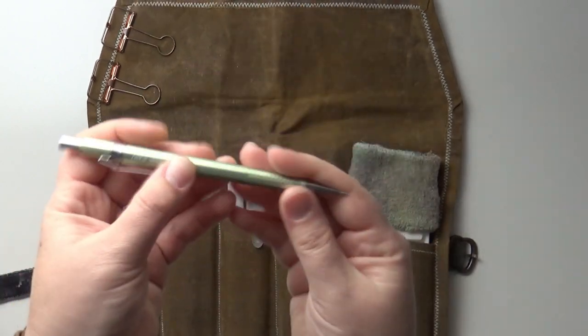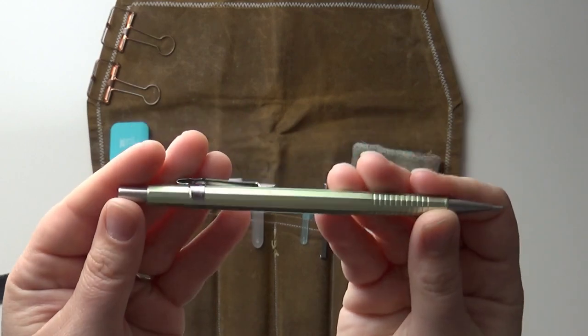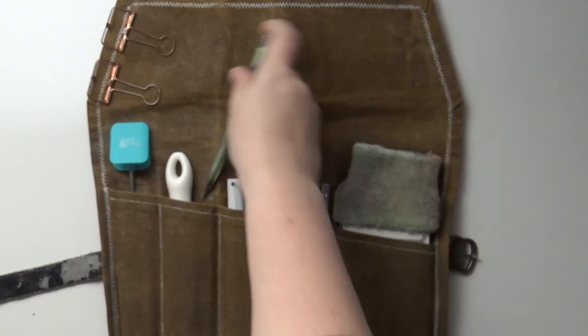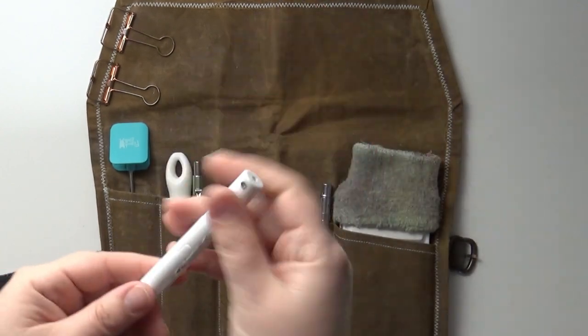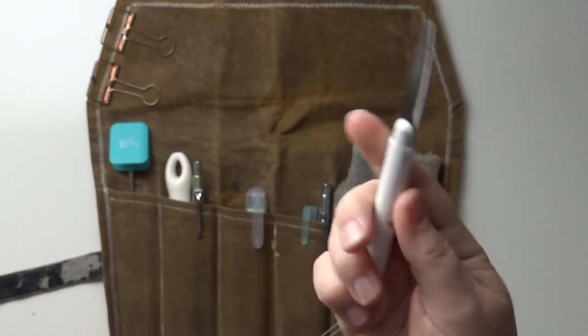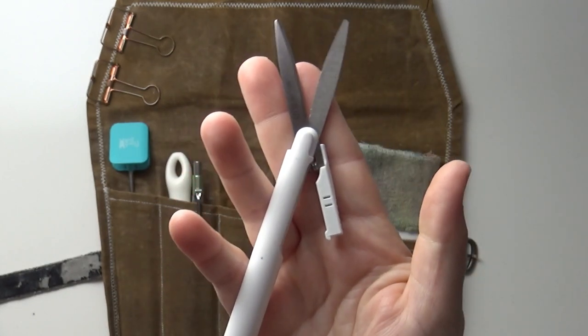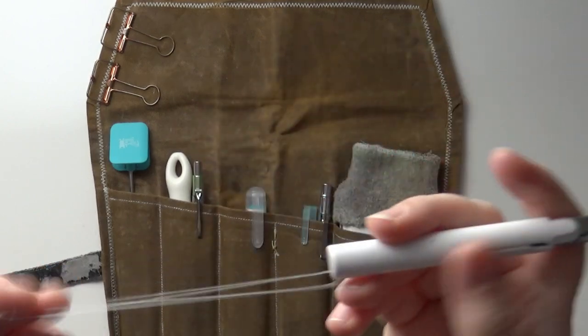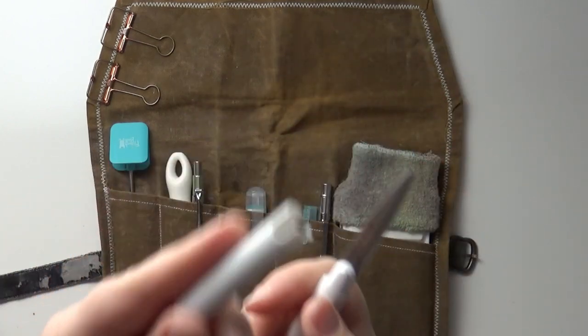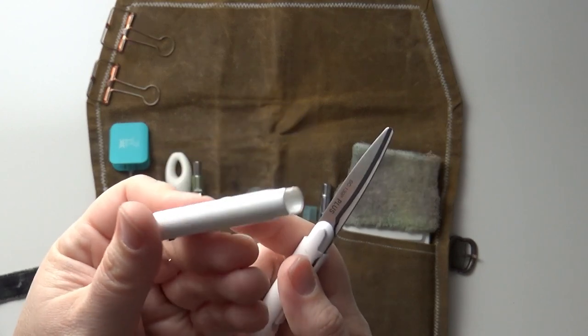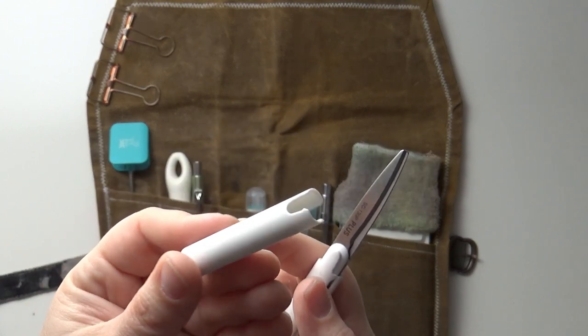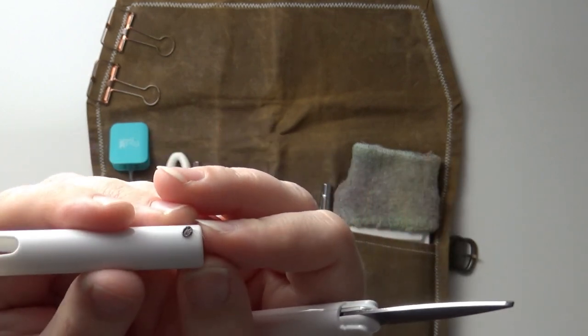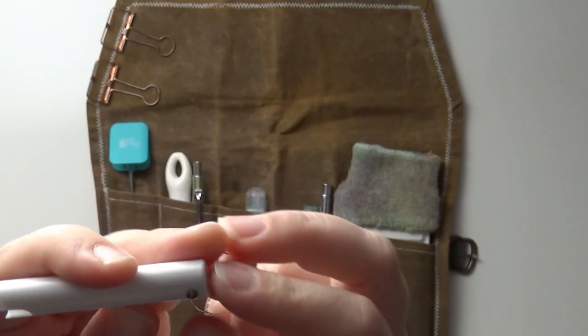Still using my 0.7 Pentel Sharp mechanical pencil, loaded with purple lead. Then I've got the compact scissors that I've been using mostly to trim my date labels and make them fit in my tabs. I poked a hole in this cap with a hot nail so it would melt the plastic and go through.